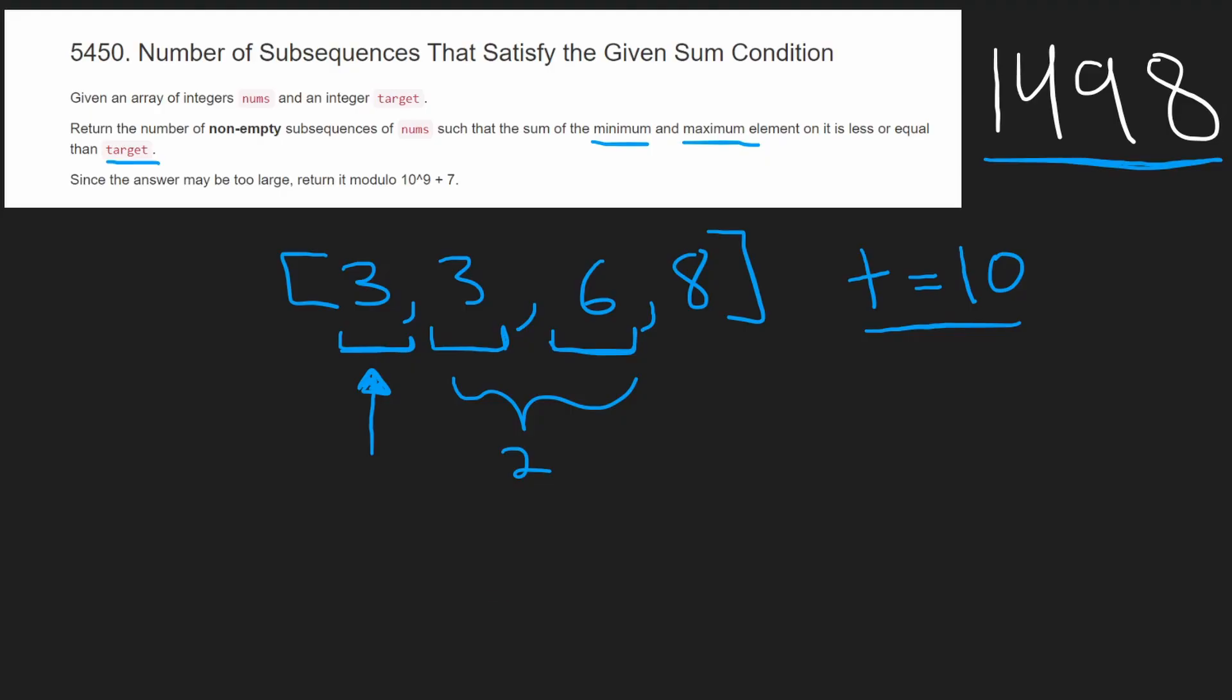So then how many subsequences that definitely contain this 3 can we get? Well, it's going to be 2 to the power of 2. This 2 is gotten from here. How many characters after? It's not 2 to the power of 3. And the reason is because this 3 isn't optional. This first 3 is not a choice that we have. We have to contain it.